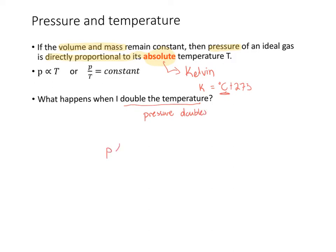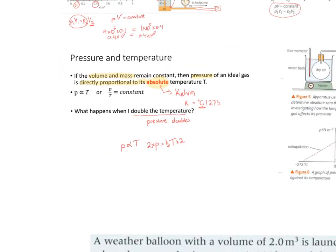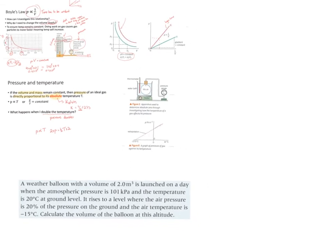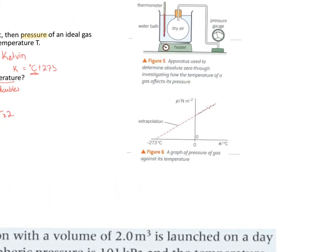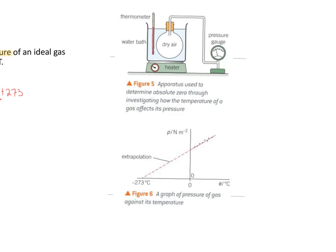If P is directly proportional to T, that means P equals a constant times T. So if I double the pressure I have to double the temperature, since the constant stays the same. There's also a practical you need to know about this — it's part of the PAGs. Hopefully we'll get time to do them this year.